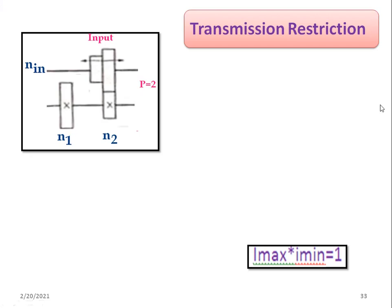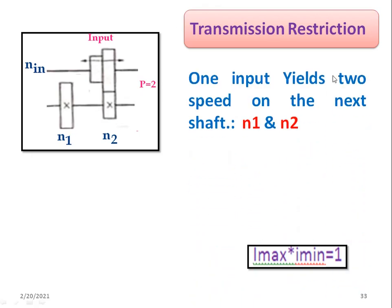Welcome back. In this video we are going to learn about the transmission restriction and how it is involved in the gearbox. Suppose the input speed is n_input, and there is a two-gear cluster — one smaller gear and one bigger gear — which transfers speed to the next shaft, generating two speeds: n1 and n2. So one input yields two speeds on the next shaft.